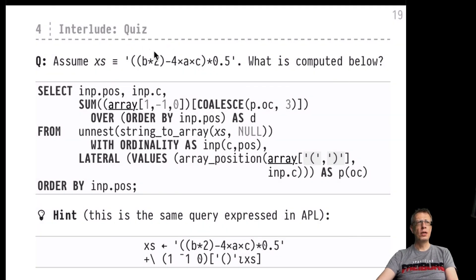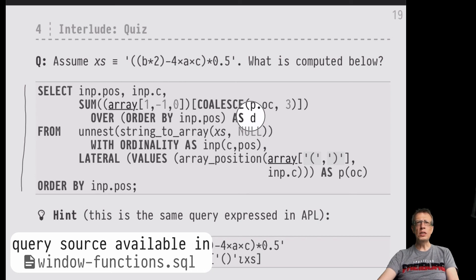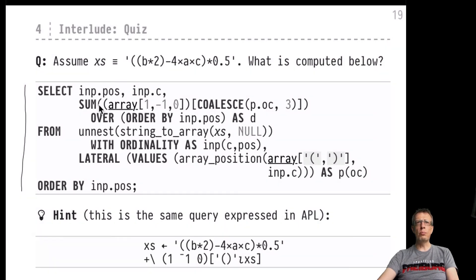This would be an entirely different sort of quiz. And it would just ask what this query is computing. What's the result of this query? How would you interpret the three column result of this query? You see that the result will have columns pos and c and d. And you can also see that d is the result of the prefix sum of a sum scan. You see the frame specification here over this expression.